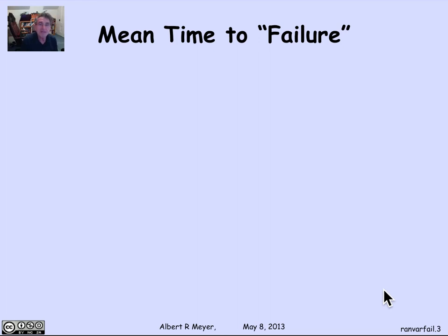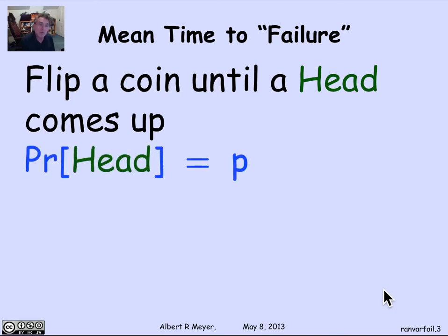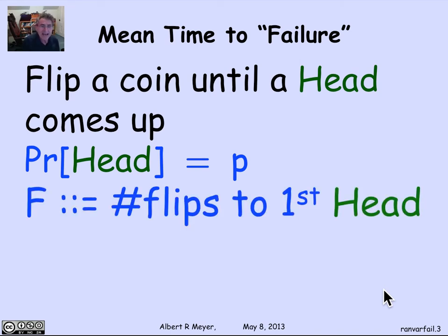The mean time to failure problem we can formalize in terms of flipping coins. We're going to flip a coin until a head comes up, thinking of a head as a failure and a tail as a success. Let's assume the probability of getting a head — the probability of failure — is P. This is not a fair coin; it may be biased in either direction. Let F be the number of flips until the first head comes up, the number of flips until the first failure. If we count flips as time, it's the time to fail.